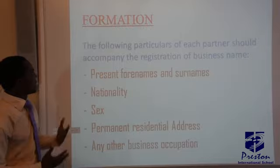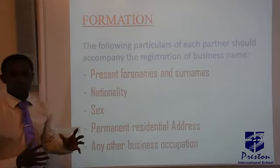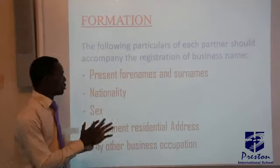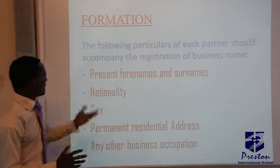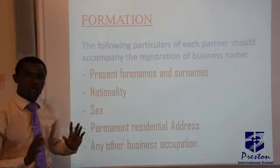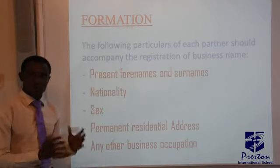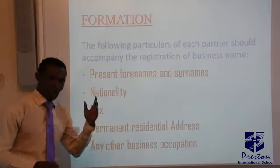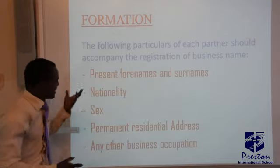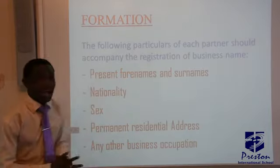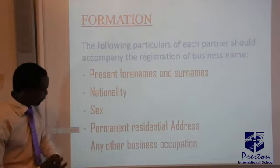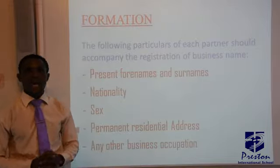The last point for today is the formation of a partnership. Partnership is formed with several contents. The following particulars of each partner should accompany the registration of the business: the present forenames and surnames of each member, the nationality — whether a partner is from Ghana, Nigeria, or the United States, their nationality should be stated — the sex, whether male or female, the permanent residential address of each member, and other business occupation.